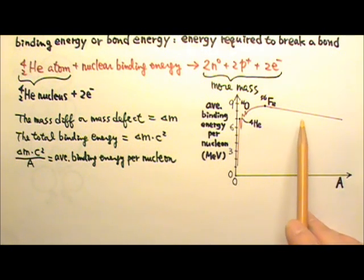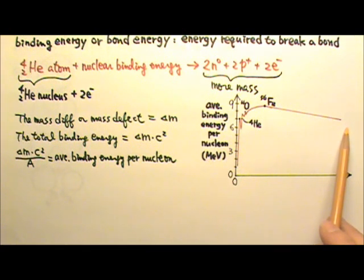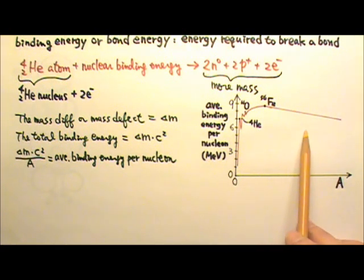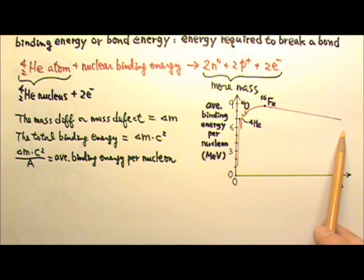It shows us that those very big nuclei are not very stable because they have lower average binding energy per nucleon. Therefore, they have a tendency to get smaller.